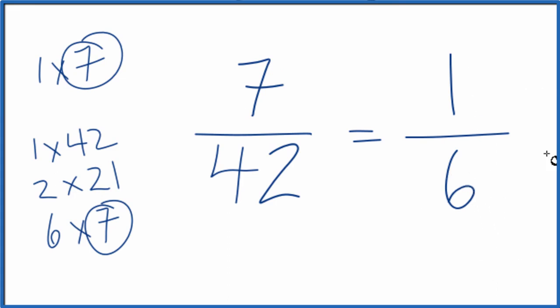And we can't reduce this any further. These are equivalent fractions, 7 divided by 42, and 1 divided by 6. They'll give you the same number.